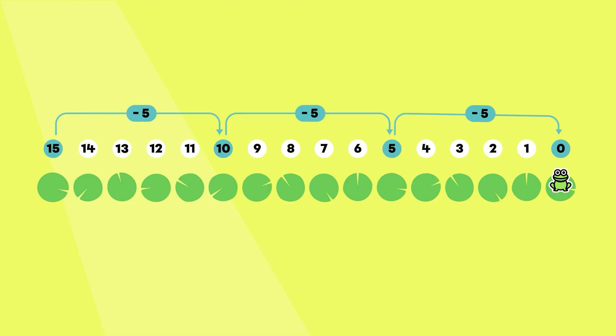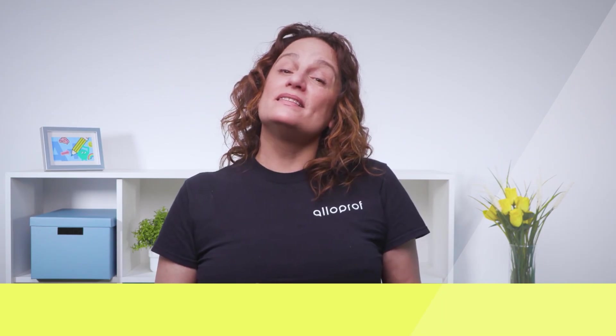See? The frog jumped by five in descending order by hopping onto lily pads fifteen, ten, five, and zero. I hope you better understand how to skip count. Practice by imagining a frog jumping from one lily pad to another.